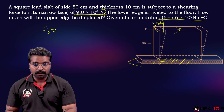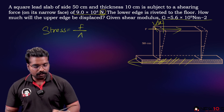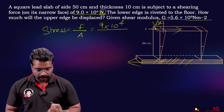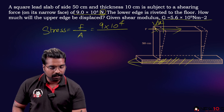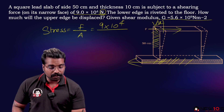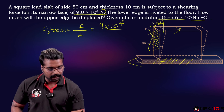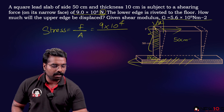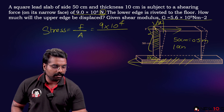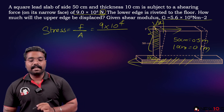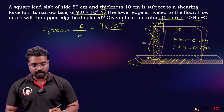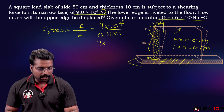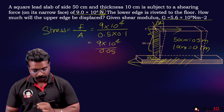First, calculate stress: force divided by area. The force is 9 × 10⁴ N. The area is length times thickness: 50 cm is 0.5 m and 10 cm is 0.1 m, so area = 0.5 × 0.1 = 0.05 m². Stress = 9 × 10⁴ divided by 0.05.